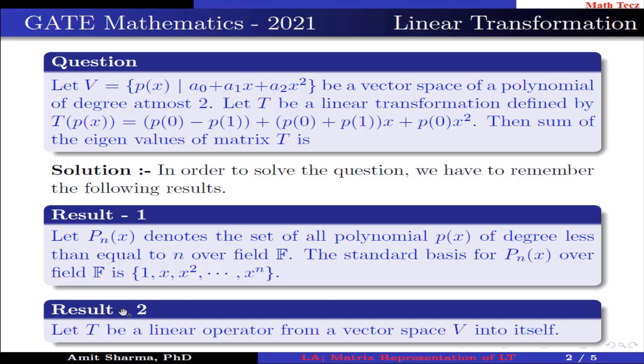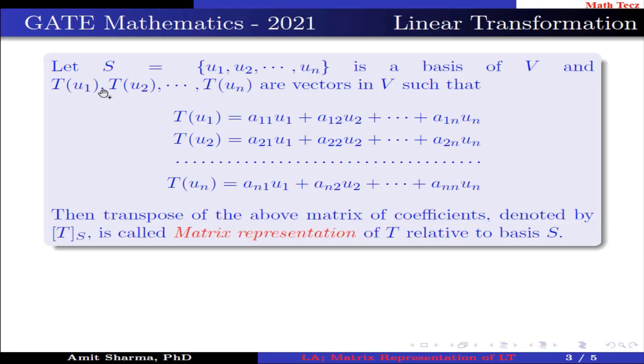Result number 2: Let T be a linear operator from a vector space V into itself. Let S = {u₁, u₂, ..., uₙ} be a basis of V, and T(u₁), T(u₂), ..., T(uₙ) are vectors in V such that T(u₁) = a₁₁u₁ + a₁₂u₂ + ... + a₁ₙuₙ,